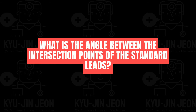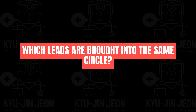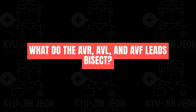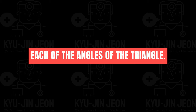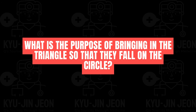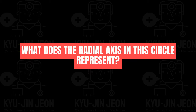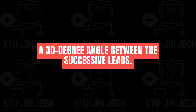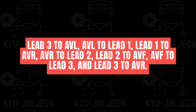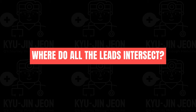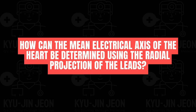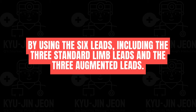The angle between intersection points of standard leads is 60 degrees. AVR, AVL, and AVF are brought into the same circle, bisecting each angle of the triangle, creating a 30-degree angle between successive leads. The sequence is: lead 3 to AVL, AVL to lead 1, lead 1 to AVR, AVR to lead 2, lead 2 to AVF, AVF to lead 3. All leads intersect at the center of the circle. The mean electrical axis can be determined using the 6 limb leads.